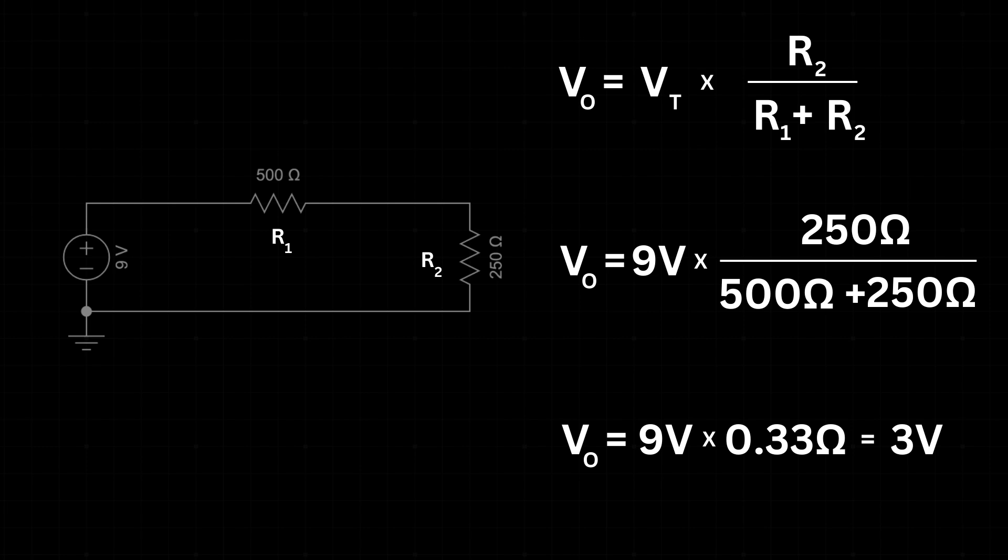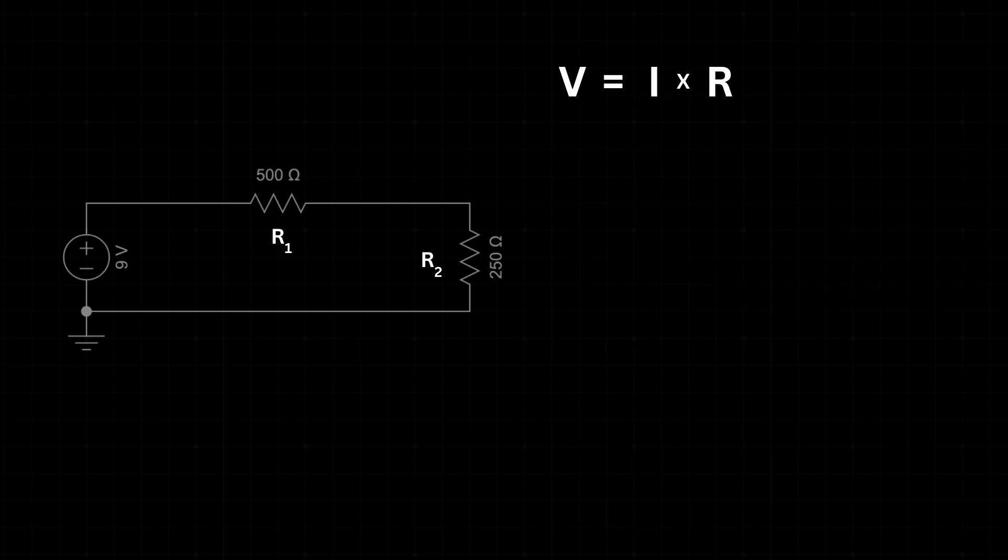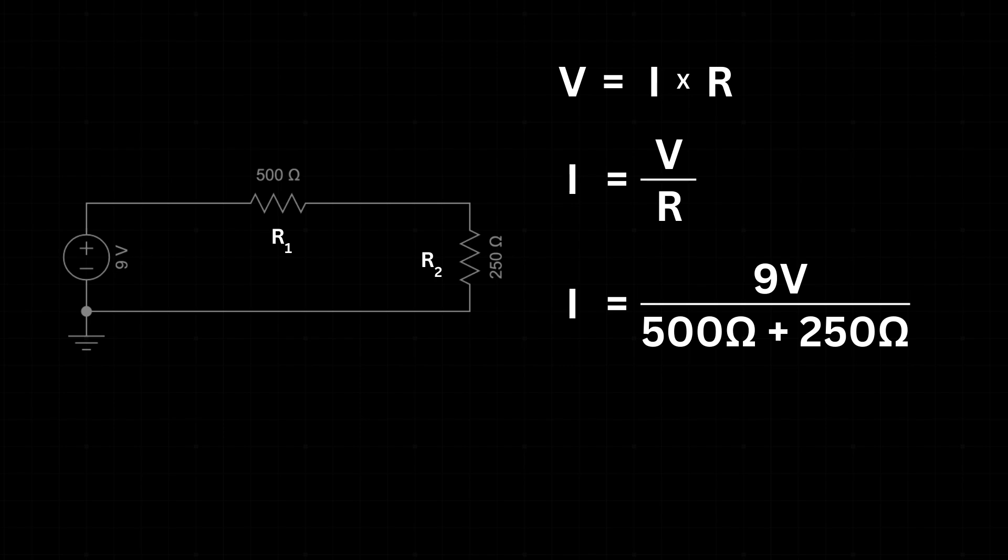What is the current flowing in the circuit? It is based on Ohm's law, V equals IR. To calculate the current, it's V divided by R. The voltage of the battery is 9 volts. The resistance is the total of R1 and R2, or 750 ohms. The current flowing in the circuit is 0.02 amps, or 12 milliamps.